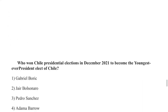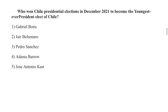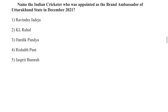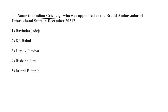Gabriel Boric won the Chilean presidential elections in December 2021 to become the youngest-ever president-elect of Chile.